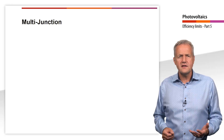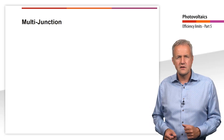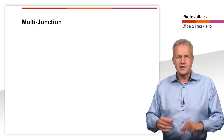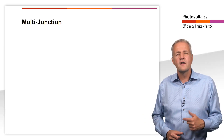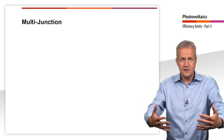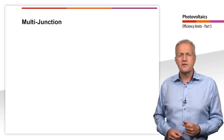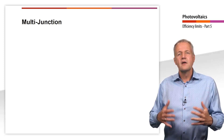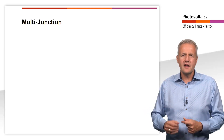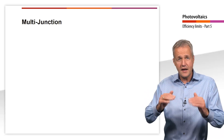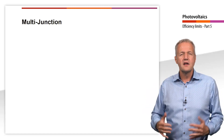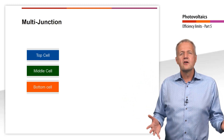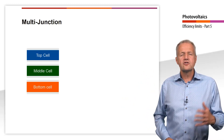We have now learned that the efficiency that can be achieved with solar cells is limited. While it is very motivating to get closer to this theoretical limit, one can also ask whether there is a possibility to overcome these limits. There are several approaches for this, of which I would like to briefly mention the most obvious one: multiple solar cells. In a multiple solar cell, several solar cells with different band gaps are stacked on top of each other. In this way, a larger part of the spectrum can be used. As an example, a three-layer triple solar cell is shown here.